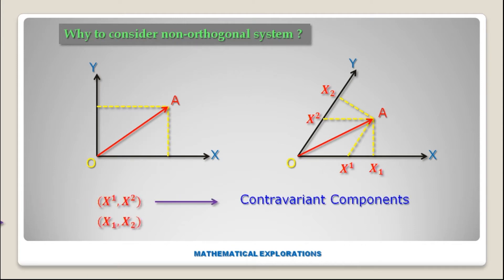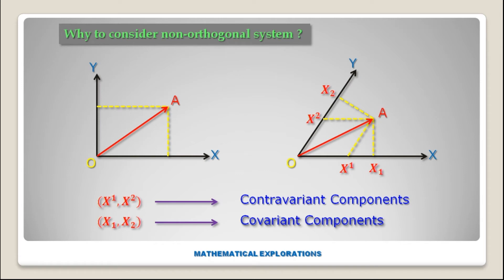And x-lower-suffix-1 and x-lower-suffix-2 are covariant components. Whenever we consider a non-orthogonal system, we will get both contravariant and covariant vectors — that is why we consider non-orthogonal systems. Thank you, see you in the next video.